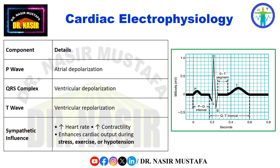Cardiac electrophysiology: the P-wave represents atrial depolarization, the QRS complex represents ventricular depolarization, and the T-wave represents ventricular repolarization. Sympathetic stimulation increases both heart rate and contractility, enhancing cardiac output during stress, exercise, or hypotensive states.